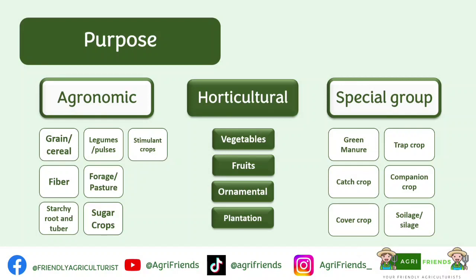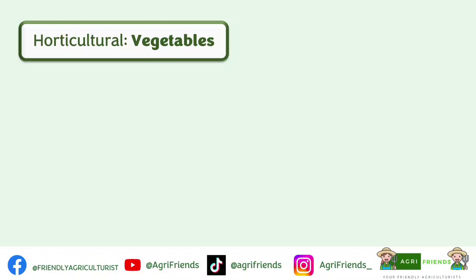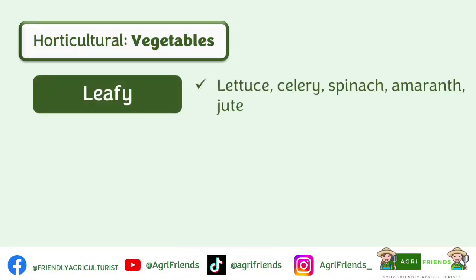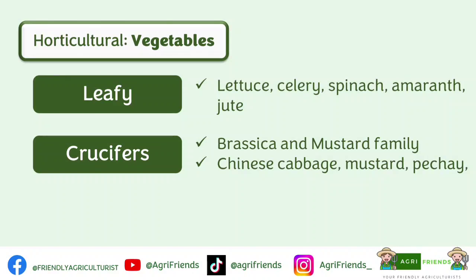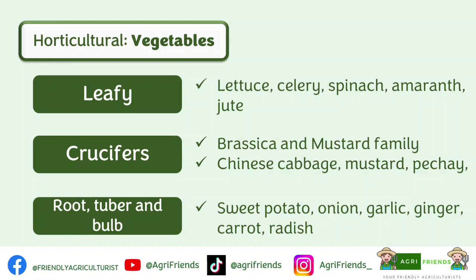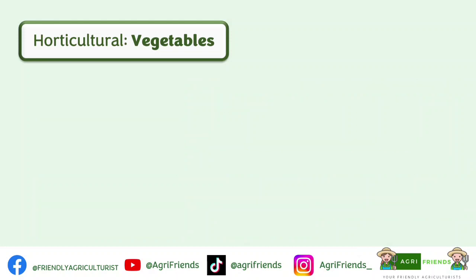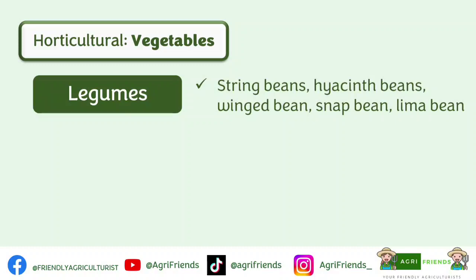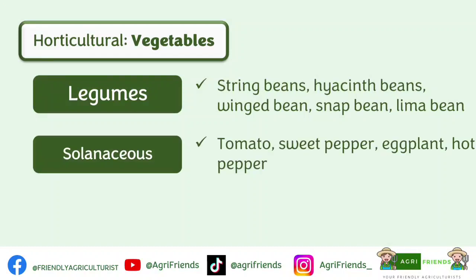Under the horticultural category, first are vegetables. Leafy vegetables are grown for their leaves — such as lettuce, celery, spinach, amaranth, and jute. Crucifers are from the brassica and mustard families — such as Chinese cabbage, mustard, and pechay. Root, tubers, and bulbs are grown for their enlarged roots and tubers — examples include sweet potato, onion, garlic, ginger, carrot, and radish. Legumes as vegetables — string beans, hyacinth beans, winged beans, snap beans, and lima beans — are normally grown for their pods. Solanaceous plants are from the nightshade family — tomatoes, sweet pepper, eggplant, and hot pepper.